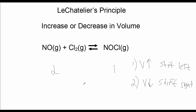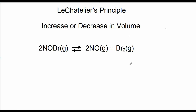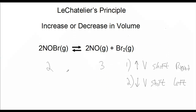Now here are a couple of examples to try. Predict for this reaction what would occur if we increase the volume and if we decrease the volume. Pause the video and give it some thought. In this case, we have two gas molecules on the left and three on the right. If we increase the volume, the reaction shifts to the right, producing more molecules for the larger space. If we decrease the volume, the reaction shifts to the left, producing fewer molecules.